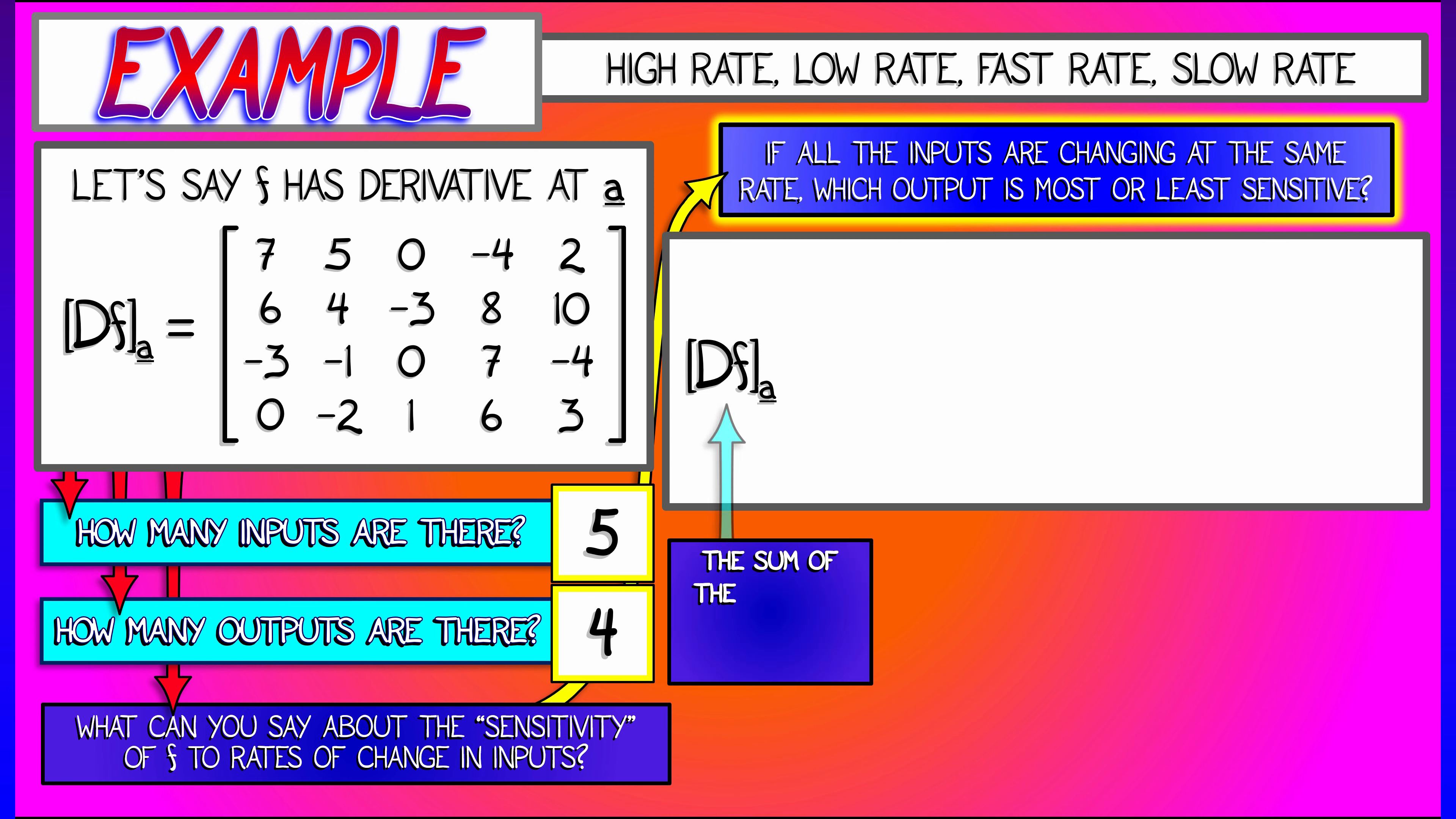How would we do that? Well, let's say you look at the vector of rates of change that is all ones. So one, one, one, one, one. Now, hit that vector with the derivative, with that linear transformation. Algebraically, that's just a sum of the columns.